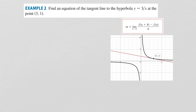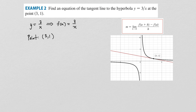Find the equation of the tangent line to the hyperbola y equals 3 divided by x at the point (3, 1). Here is the graph of 3 over x, with the point (3,1) as the point of tangency. We'll use the new definition for the slope. So f(x) equals 3 over x, the point of tangency is (3, 1), and a equals 3 since it's the x-coordinate of that point.